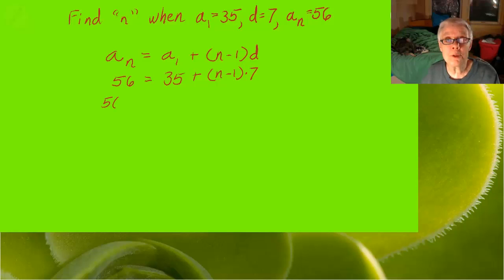I'm going to subtract 35 from both sides. 56 minus 35 equals, and I'll distribute, 7n minus 7. So I'll have 21 on the left and 7n minus 7 on the right.